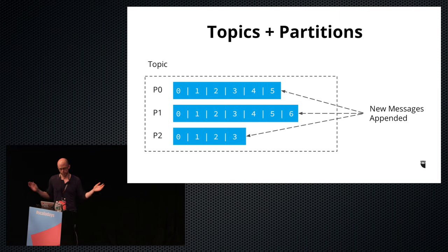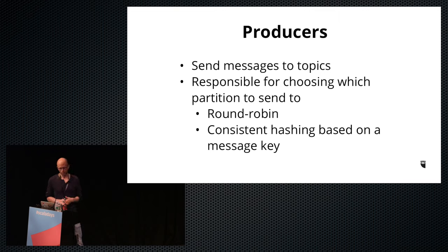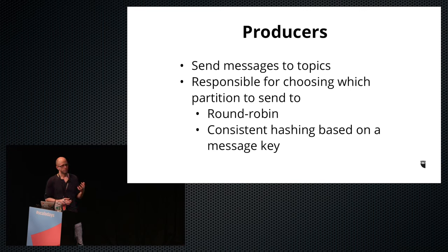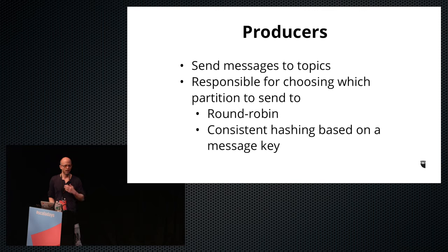You usually start with just a few partitions and add more as more parallelism is necessary. Producers, as their name implies, send messages to partitions in topics and are responsible for choosing which partition to send to. Messages can be round-robined over all partitions, which puts an even load on each. Alternatively, the producer can consistently hash messages based on a message key, ensuring that messages with the same key always go to the same partition, giving you ordering for individual keys. This can cause an imbalance if one message key is much busier than the others.